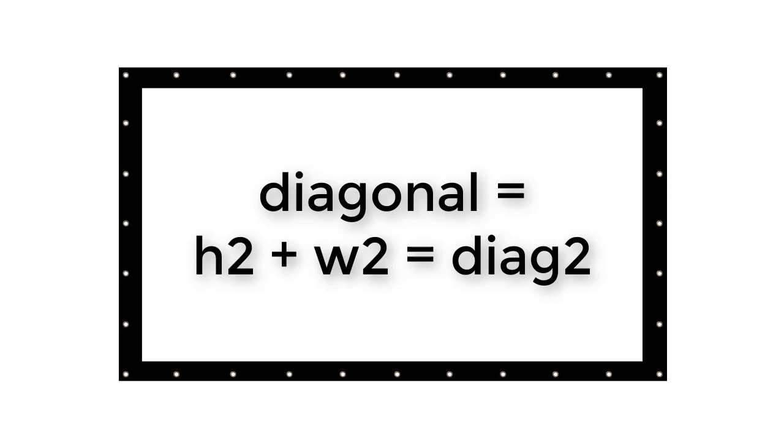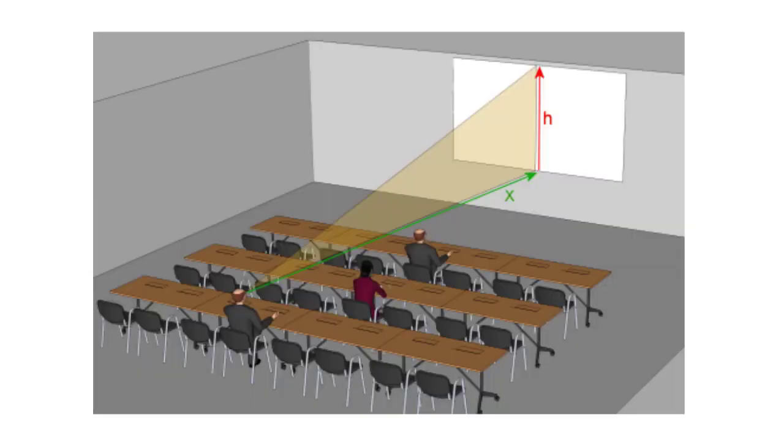So, here's an example of how we do this. We're in a room where the farthest viewer is 30 feet from the display location. The viewers will be primarily looking at PowerPoints and spreadsheets, which is level 6, detail. We divide 30 by 6 and we get 5 feet for the screen height.